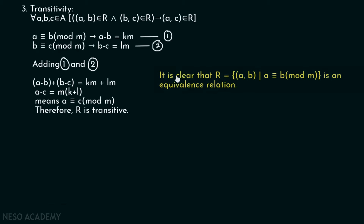It is clear that R — the set of all ordered pairs (A, B) such that A is congruent to B mod M — is an equivalence relation. Since this is an equivalence relation, we can also find the equivalence classes of this relation. Let's find out the equivalence classes of R.